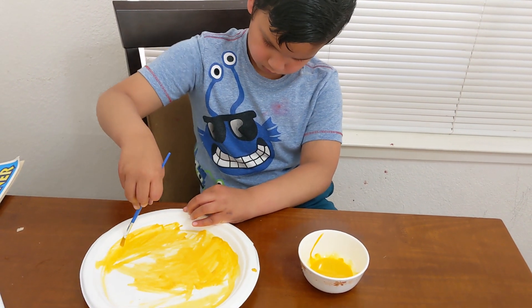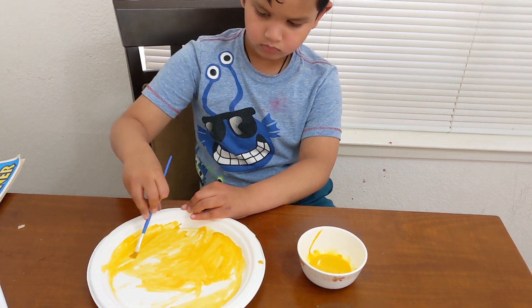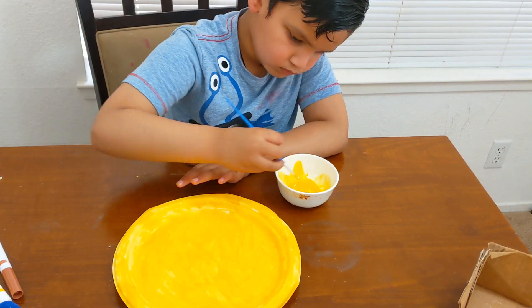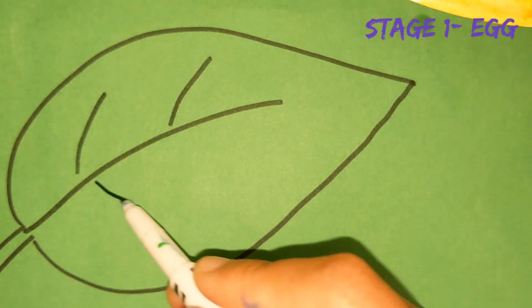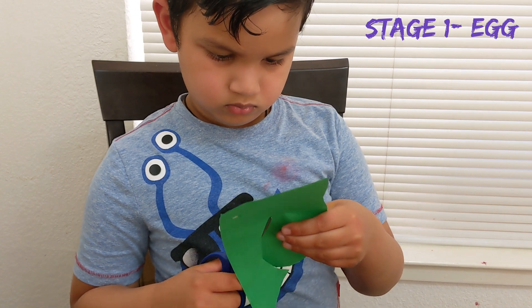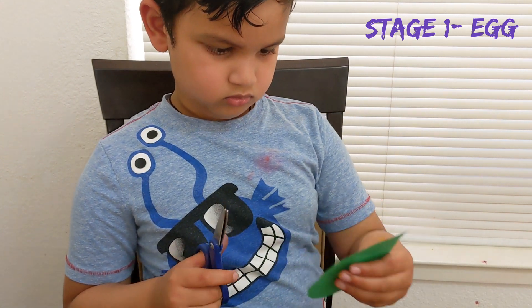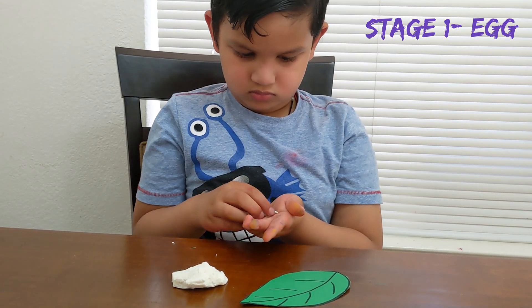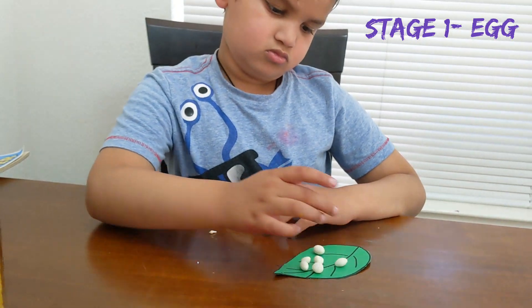Take a paper and paint it. Make eggs with the crayon. The first stage is egg.